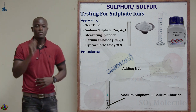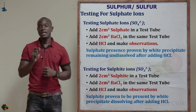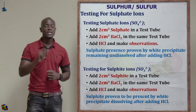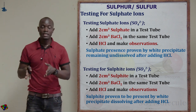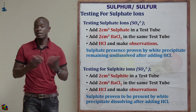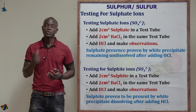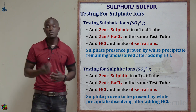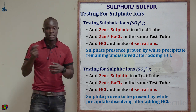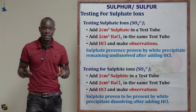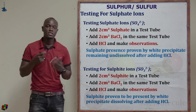That procedure used the sulfate ions. For the sulfite, everything is the same but using sodium sulfite: we added two centimeters cubed of sodium sulfite in a clean test tube, followed by two centimeters cubed of barium chloride. Then two centimeters cubed of hydrochloric acid was added and observations were made.